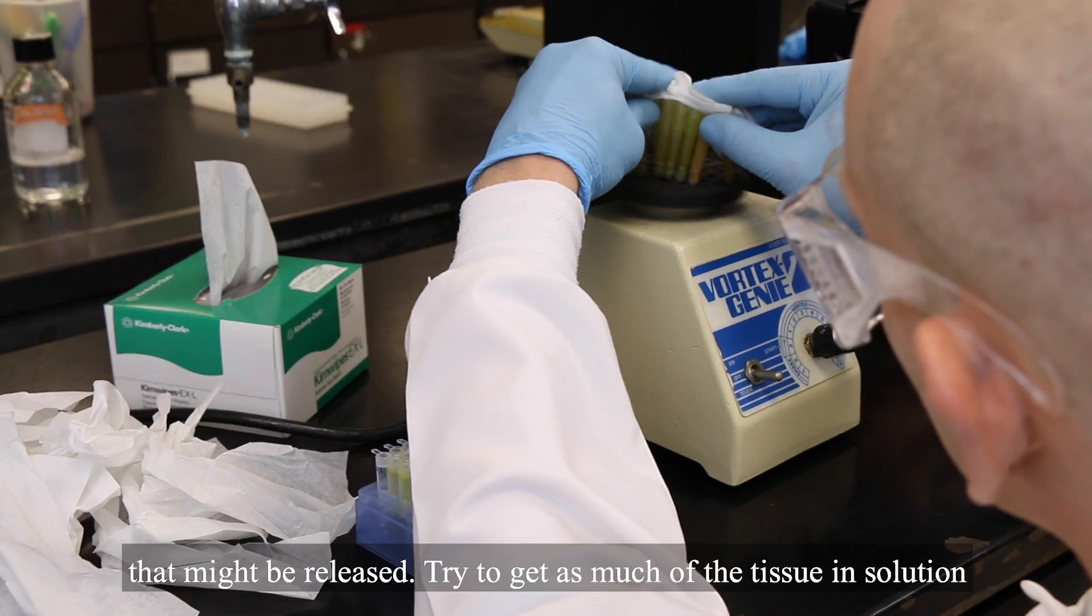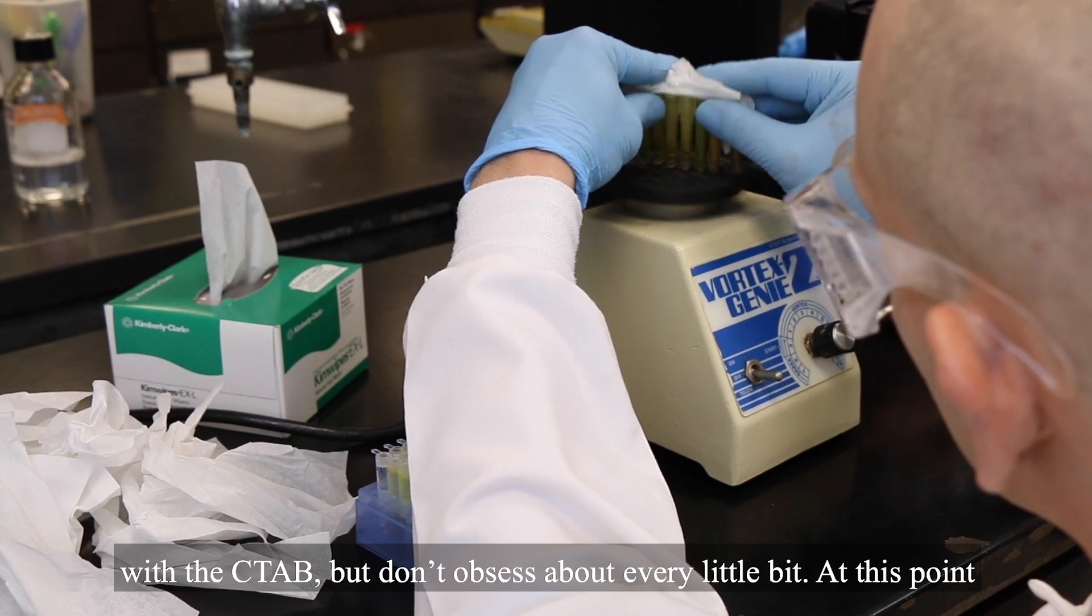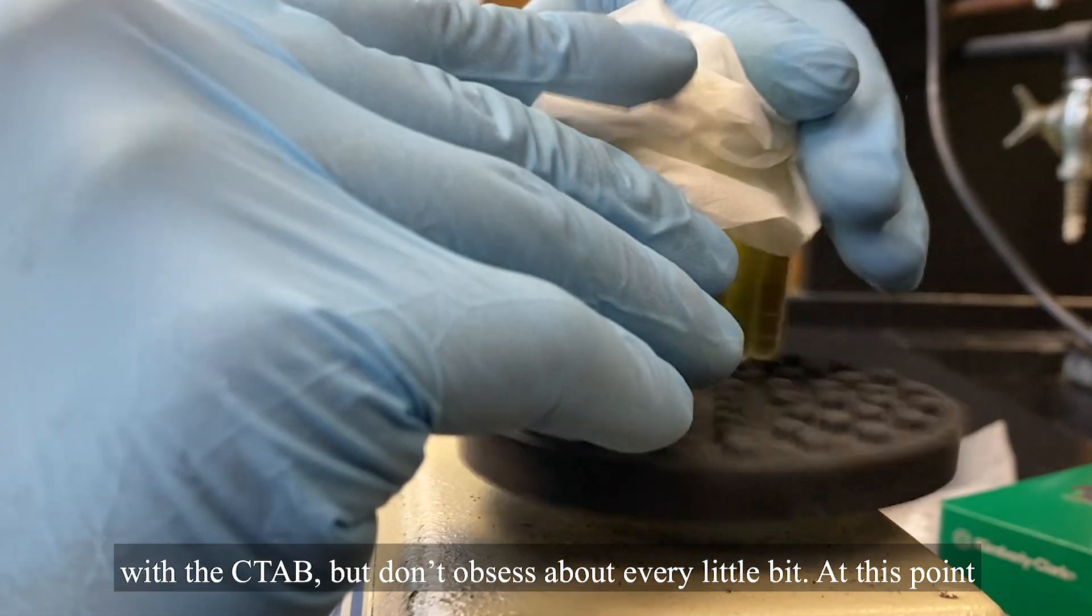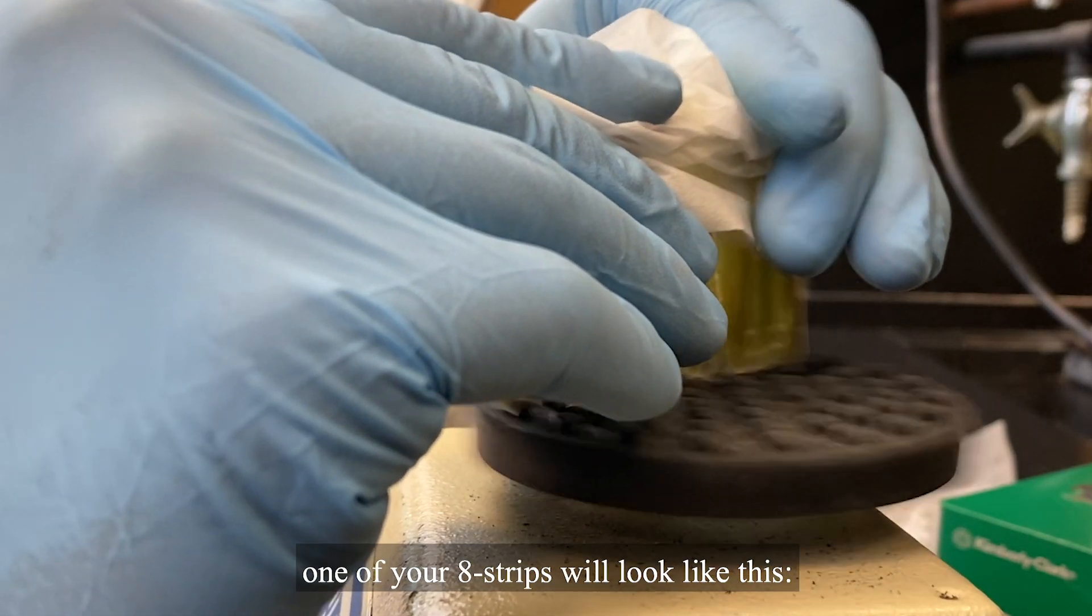Try to get as much of the tissue in solution with the CTAB, but don't obsess about every little bit. At this point, one of your H strips will look like this.